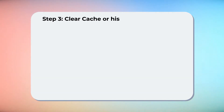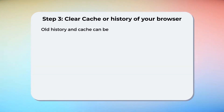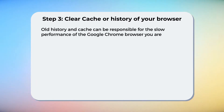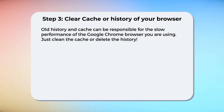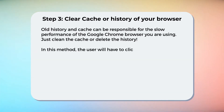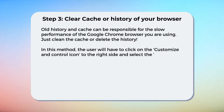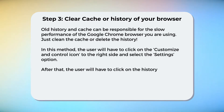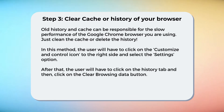Step 3: Clear cache or history of your browser. Old history and cache can be responsible for the slow performance of the Google Chrome browser you are using. Just clean the cache or delete the history. The user will have to click on the Customize and Control icon on the right side and select the Settings option. After that, click on the History tab and then click on the Clear Browsing Data button.